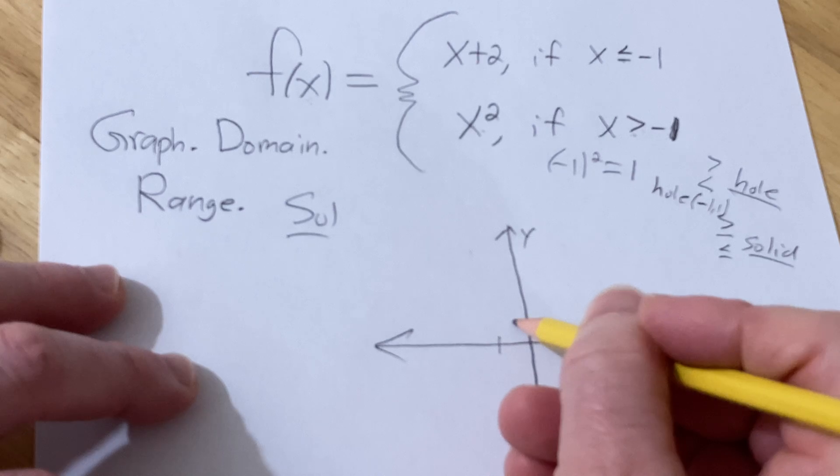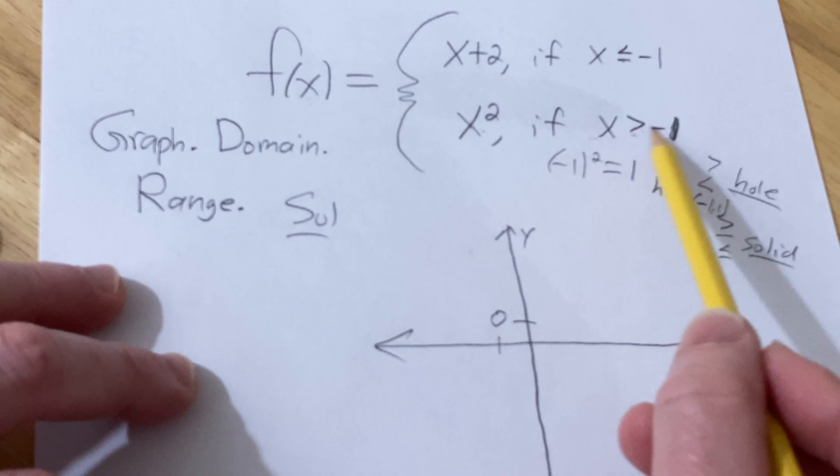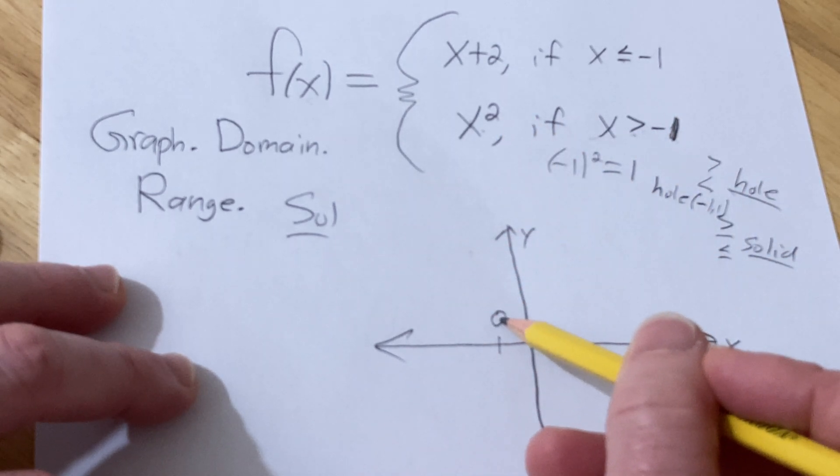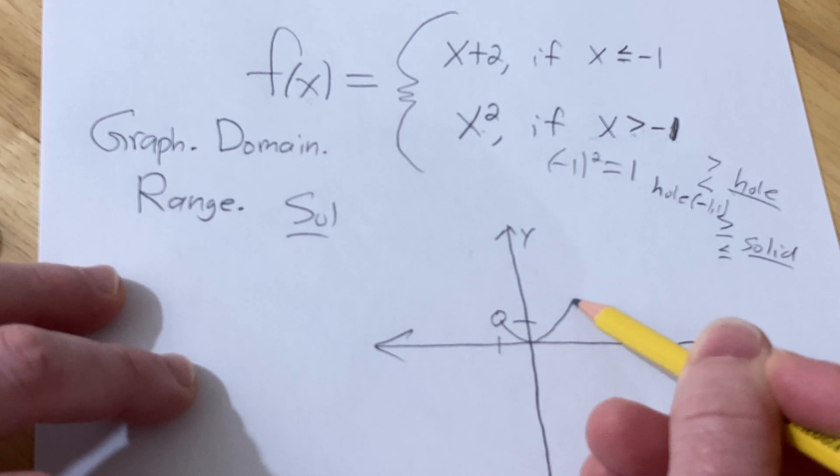So if I go left 1 and up 1, I have a little hole. And then the rest of the graph is valid for x bigger than negative 1. So it's a parabola, right? x squared. So we know it hits 0 and it comes up like this, and it's going to look like that.